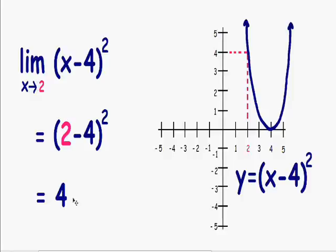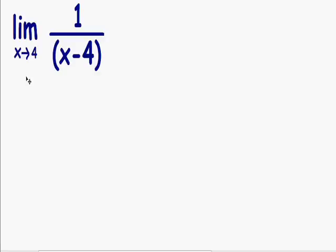So now I want to show you an example where you can't use the plug and chug method. Here we have the limit as x approaches 4 of 1 over (x - 4).